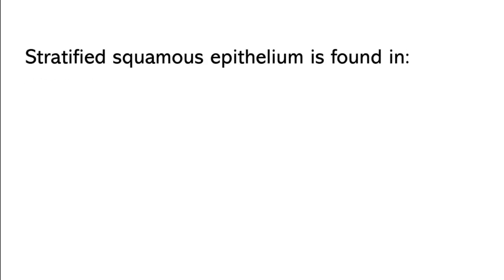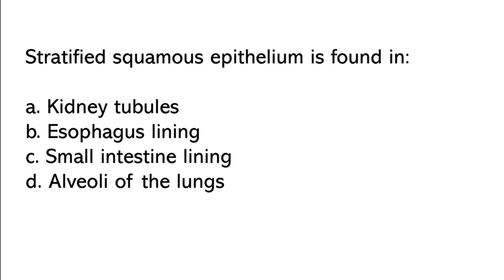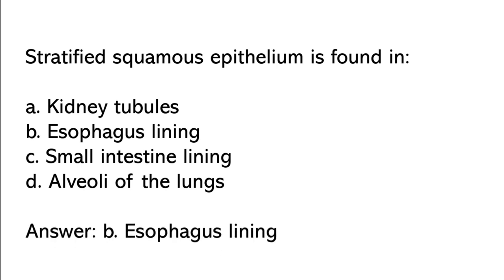Stratified squamous epithelium is found in: kidney tubules, esophagus lining, small intestinal lining, alveoli of the lungs. So the correct answer is option B: Esophagus lining.